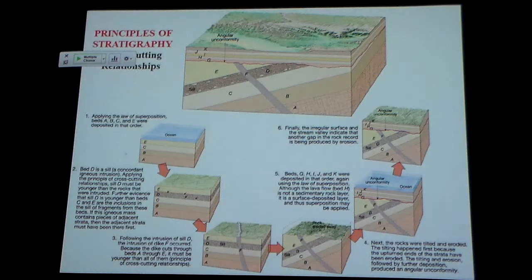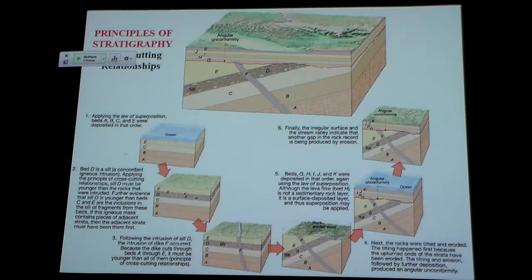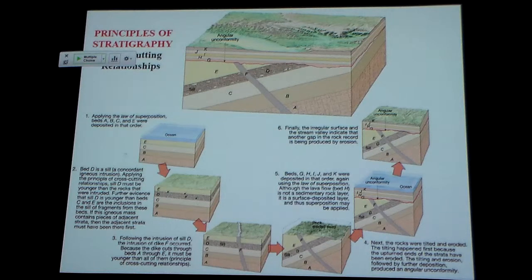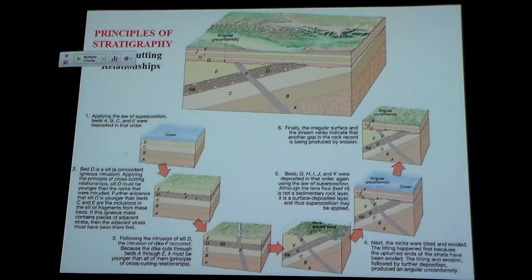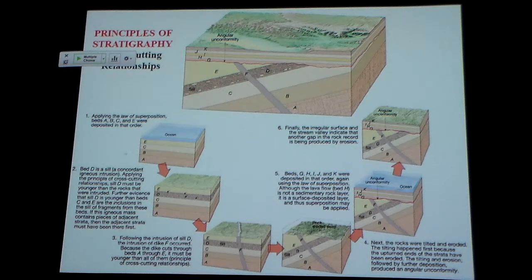We also looked at the idea of cross-cutting relationships — the way something had to exist before you could cut through it. By working our way through a block diagram like this, we could put things in relative order. This had to be there before this could occur; this cut through that, therefore that's younger. We could work from both ends of the spectrum — what happened today versus what was the first thing — and figure out the sequence of events that made the package.